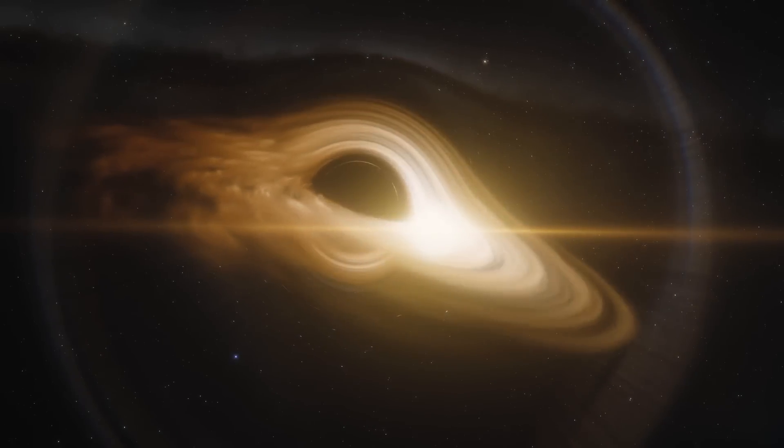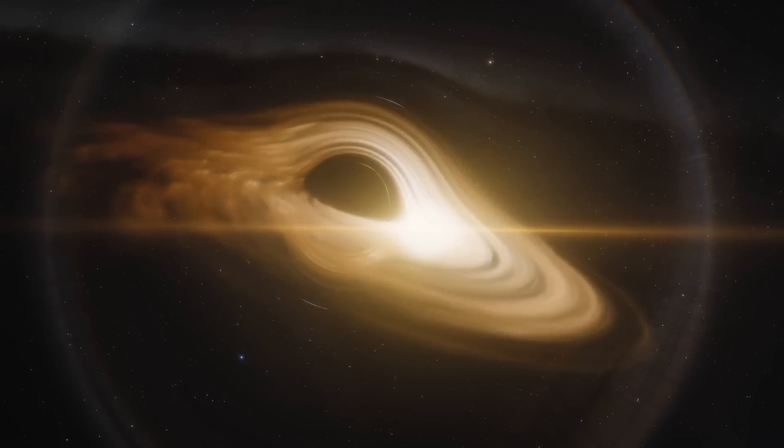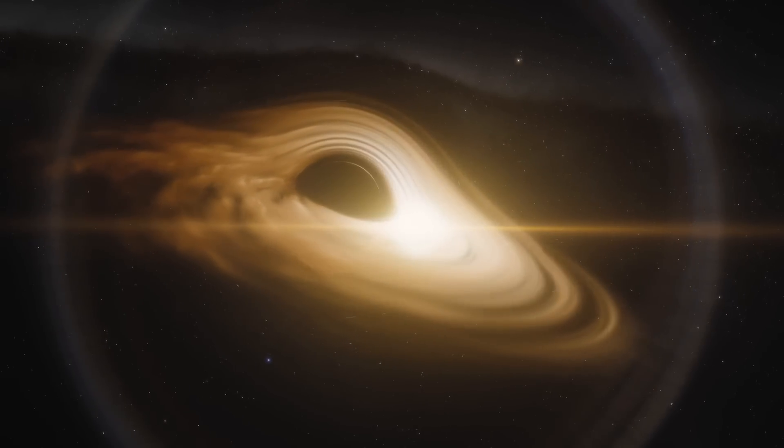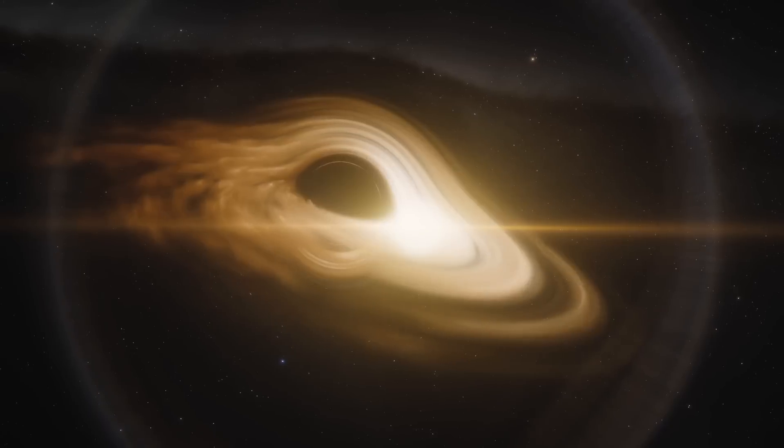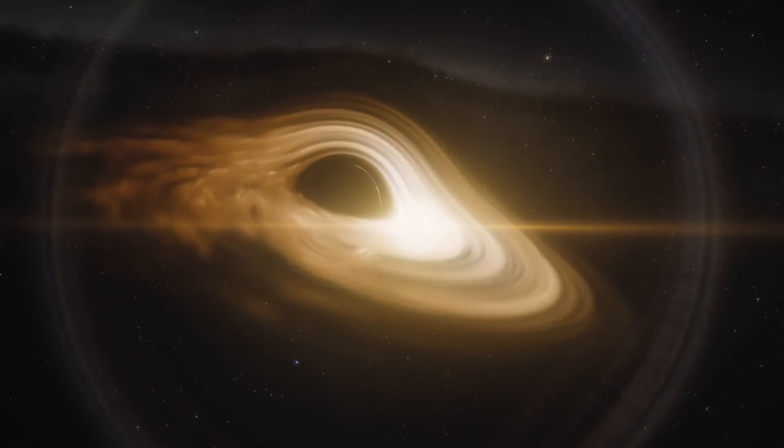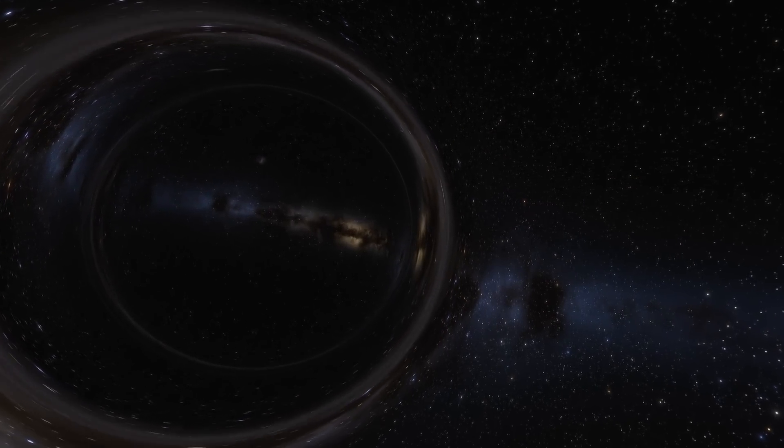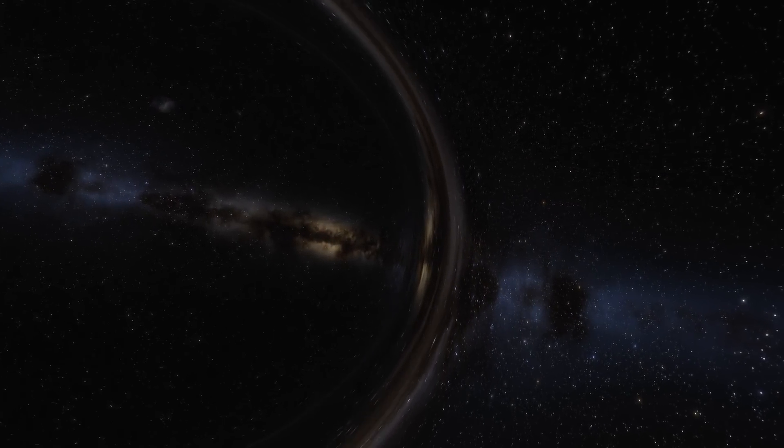This supermassive black hole, which is the closest known actively feeding black hole to Earth, lies at the heart of Centaurus A and contains an almost unbelievable mass of over 50 million of our suns. Its emissions span an enormous area and generate radio waves as material is sucked into the heart of the black hole.